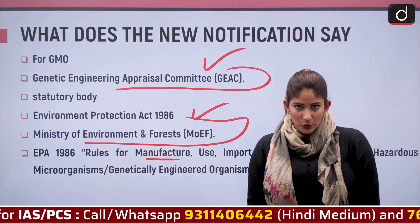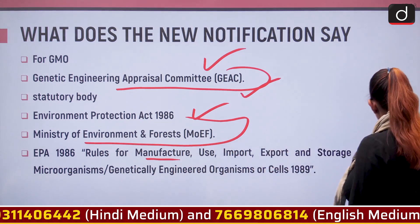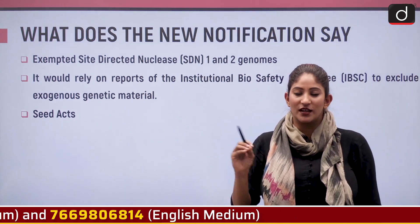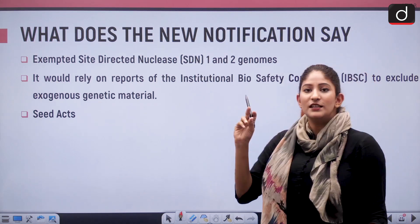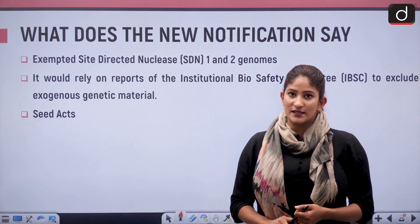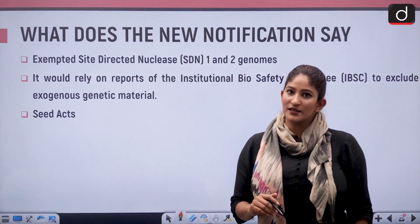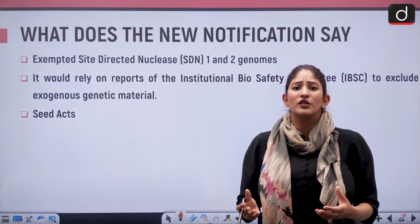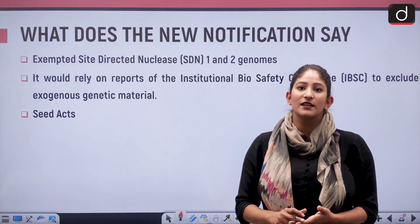GEAC has authority to approve any matter relating to GMOs and genetically modified crops. What the new notification says is: because genetically edited crops do not involve the introduction of foreign organisms, GEAC will have no say. It will have no say because no foreign material or foreign gene is being introduced — it is just editing, deleting, or inserting the nuclease. SDN1 and SDN2 are exempted.